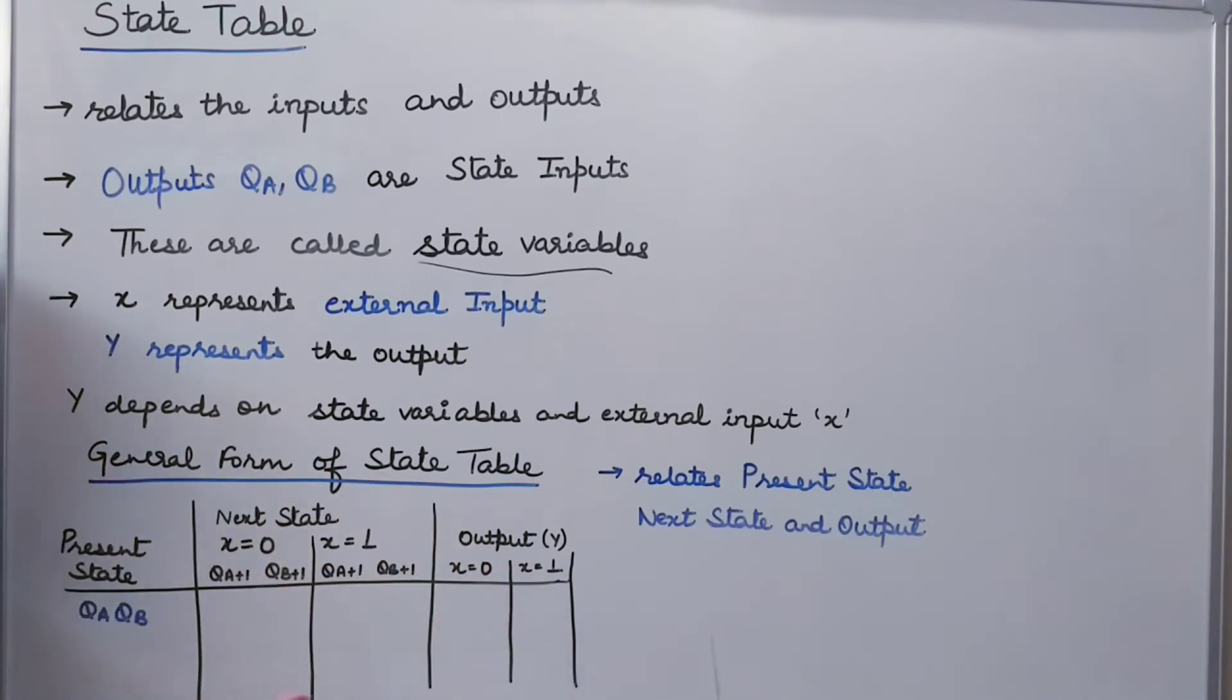This is a general form of a state table. The first we write down the present state. The present state can be written by QA, QB or can be written simply by A, B.